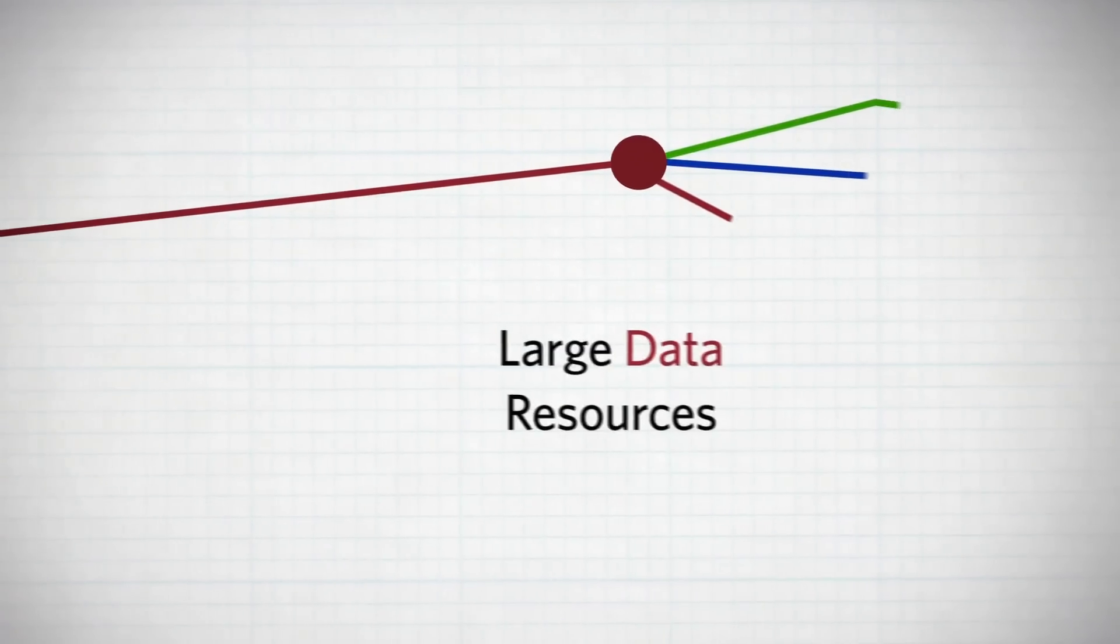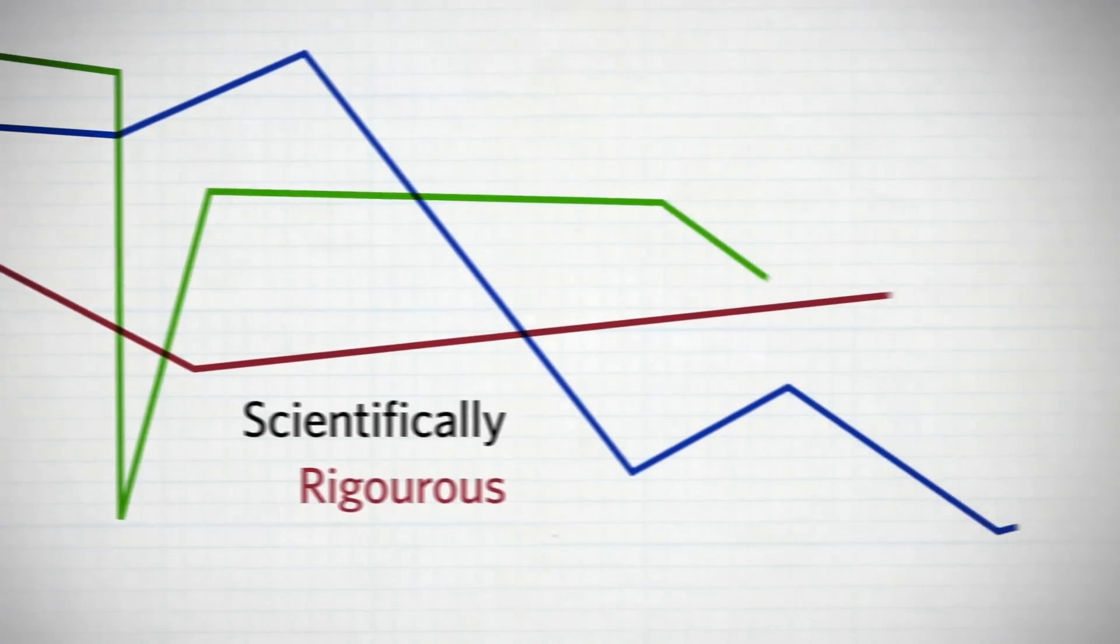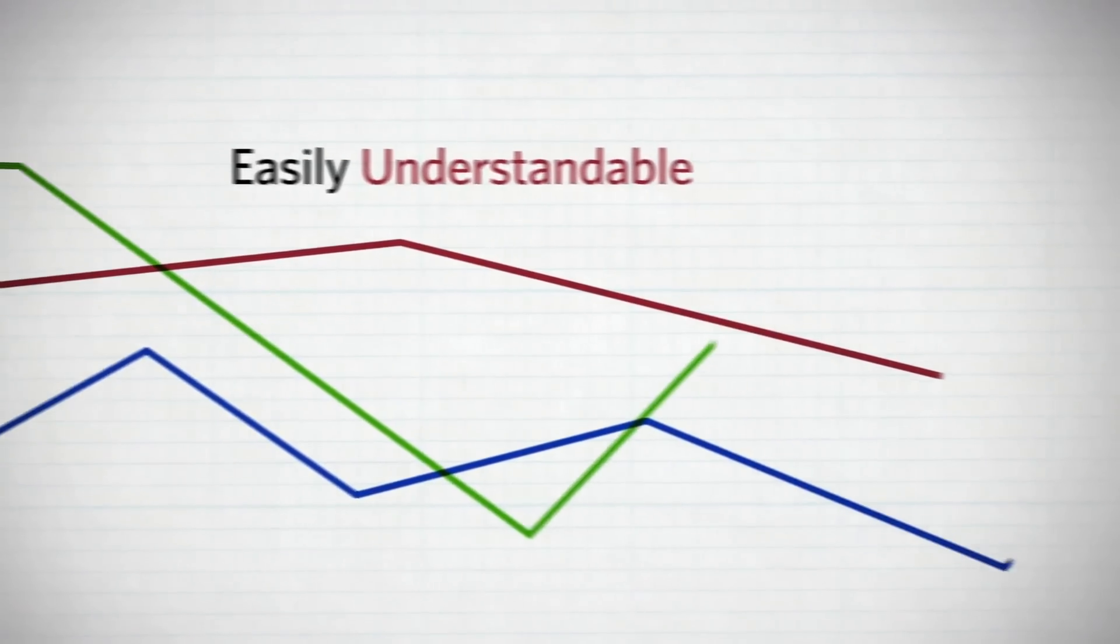The use of interrupted time series analysis and regression discontinuity science has been surging in recent years. And for good reason, these methods make good use of the huge data resources that are now available to researchers. They're scientifically rigorous, easily understandable by non-specialist audiences.